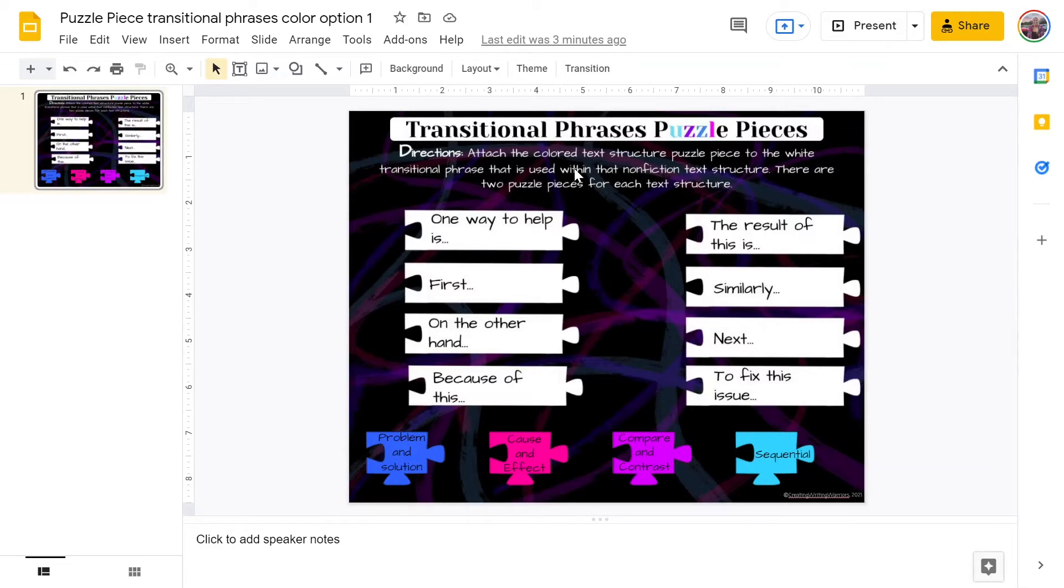This activity is for students in fourth through sixth grade, and it gives them an introduction to what type of language is used in each of these text structures. Students will read the transitional phrases that are in these longer white puzzle pieces, and then they will match which text structure these transitional phrases would be part of. These text structures are down at the bottom, and they're these colorful puzzle pieces.